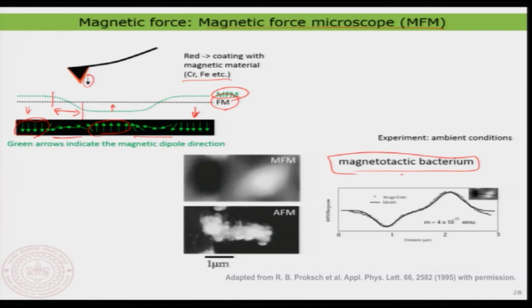Let me show you two examples. Here is a very interesting one: a magnetotactic bacterium — a special kind of bacteria that uses Earth's magnetization to orient itself. If you do AFM and MFM of the same bacterium simultaneously, in the AFM it looks just like a bright feature with no difference. But in the MFM you see a dark region and a bright region. Taking a cross section, you clearly see a down and an up orientation — one edge of the bacterium has down magnetization and the other has up magnetization. It is a magnetic dipole, and that is how this bacterium aligns with Earth's magnetization.